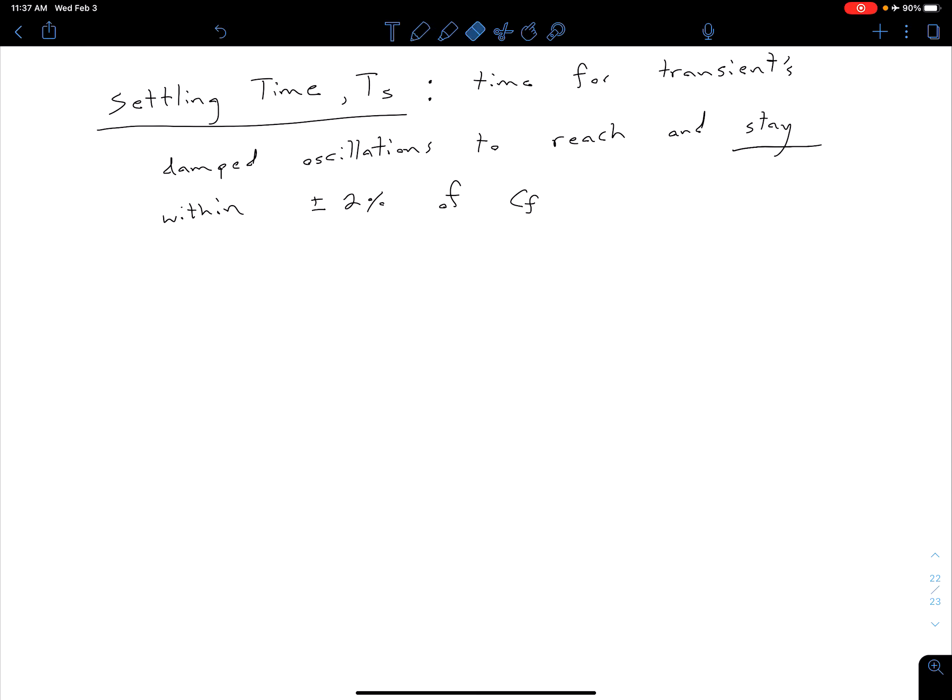Recall that for our system, we have a C final value of 1. We've seen why that is a couple times before. But in this case, we have a unit step input, so our C final ends up being 1.